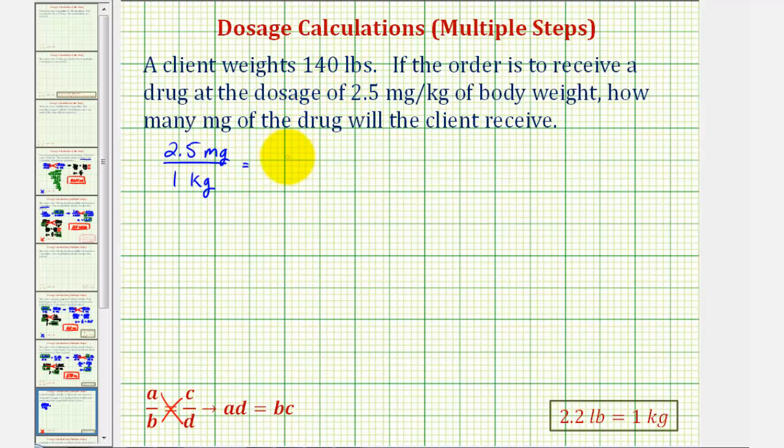Now the second rate involves our unknown. We want to know how many milligrams for 140 pounds. So let's say x milligrams, or x is the unknown, per 140 pounds.